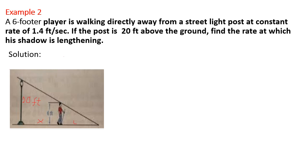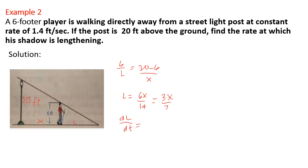Solution: Using similar triangles, 6 over l equals 20 minus 6 all over x, so l equals 6x over 14, which simplifies to l equals 3x over 7. Therefore, dl over dt equals 3 over 7 times dx over dt.